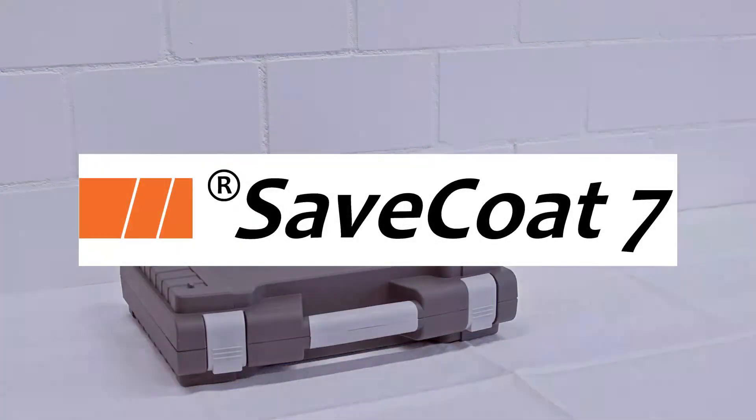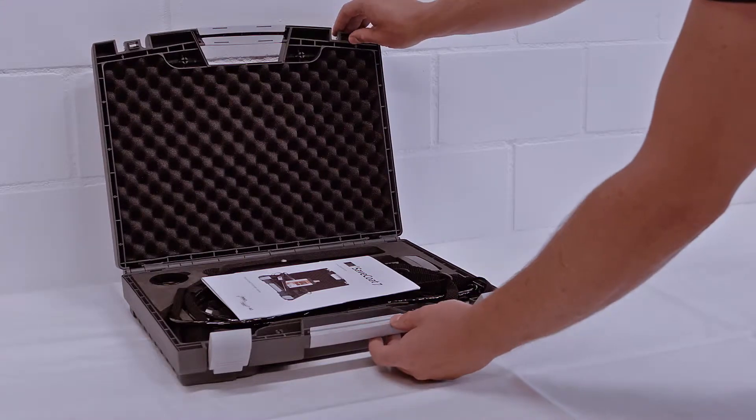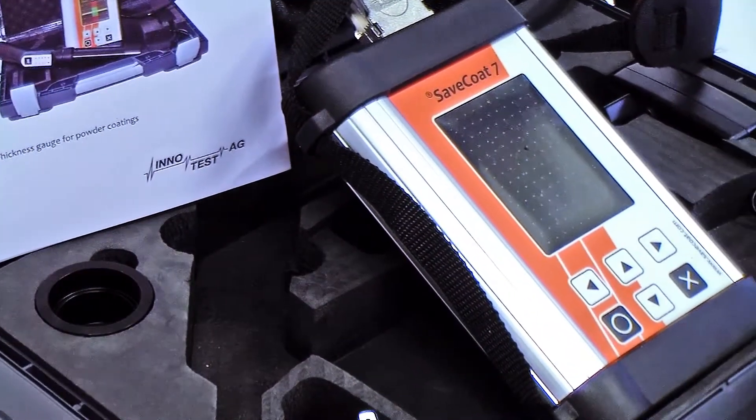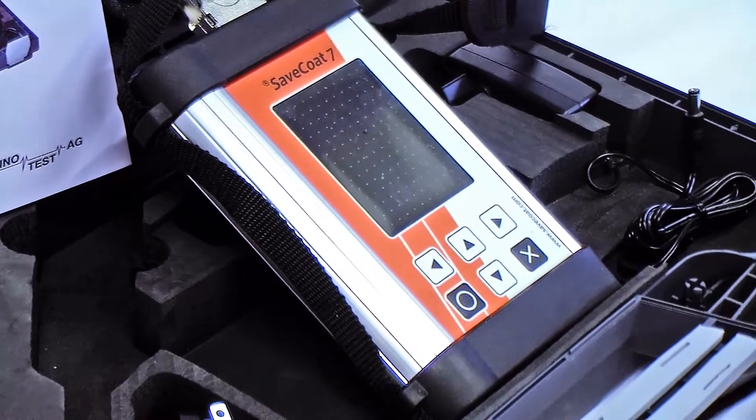The Safecode 7 is a non-contact powder thickness gauge which helps you reduce powder consumption as well as the costs related to rework and waste.